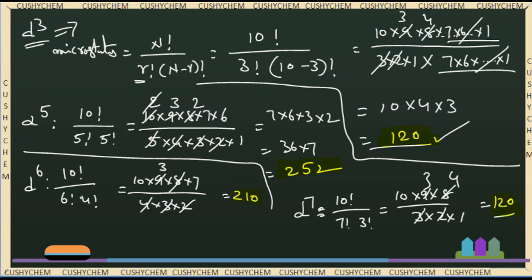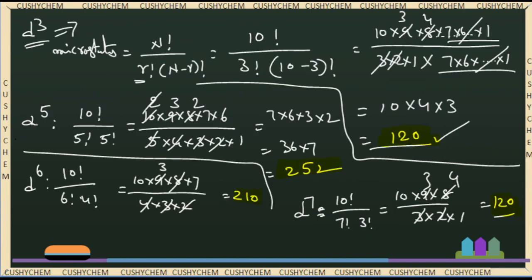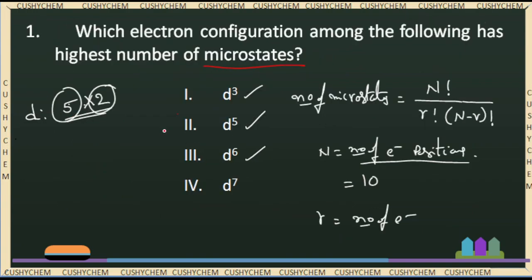So the question — which electron configuration among the following has the highest number of microstates — the highest microstates number is 252, so the electron configuration is d5. That is the correct answer. Next question.